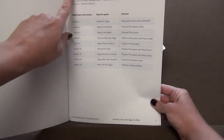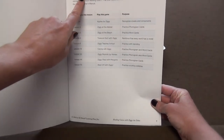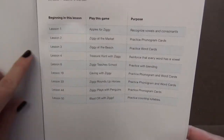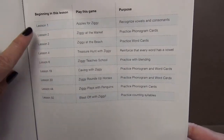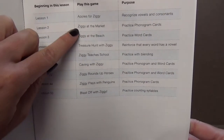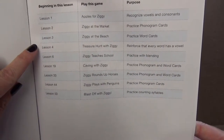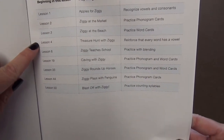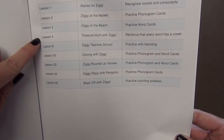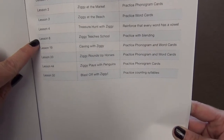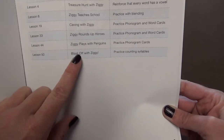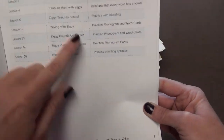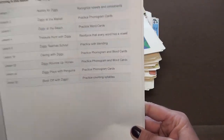It shows the correlation with Level One. At the beginning of Lesson 1 you could play Apples with Ziggy, after Lesson 2 Ziggy at the Market, Lesson 3 Ziggy at the Beach, Lesson 4 Treasure Hunt with Ziggy, and so on. After you complete Lesson 50 you will do Blast Off with Ziggy. Each section explains the purpose of those games.